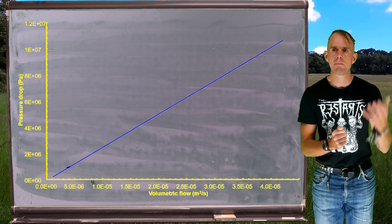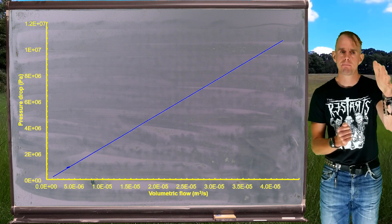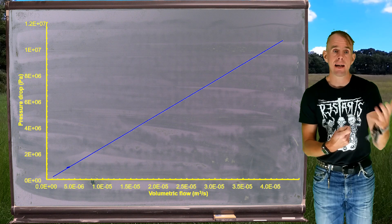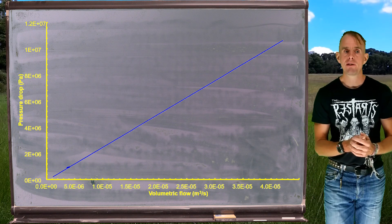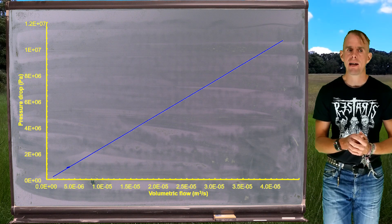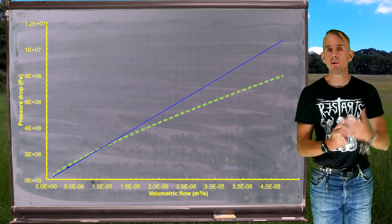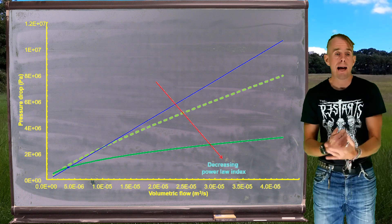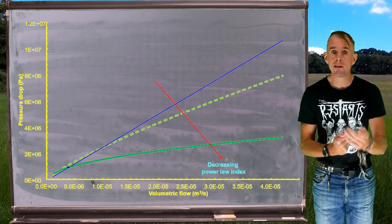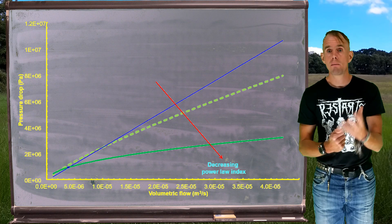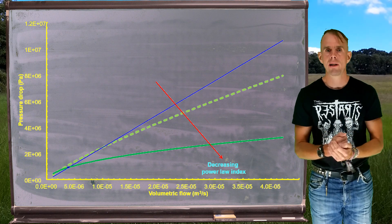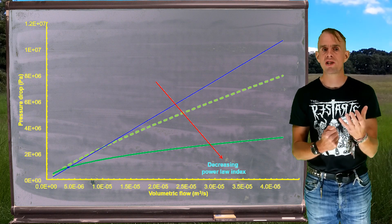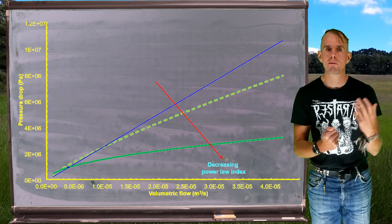Now, what happens as we manipulate n? This, our Newtonian fluid, is n equals 1. If we successively reduce n, we see a wonderful thing happening. It's not very often in nature that increasing complexity actually happens to have a good result for us. But in this case, as an engineer, it does. Because as we reduce our power law index, as our fluid becomes more and more shear thinning, our pressure drop becomes lower.